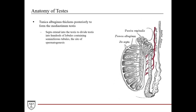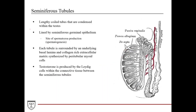The tunica albuginea thickens posteriorly to form what's called the mediastinum testis. From this thickened portion, septa extend into the testes to divide it into hundreds of lobules that contain seminiferous tubules, which are the site of spermatogenesis. You can see all these septa here, and between them are the seminiferous tubules — very coiled tubes where spermatogenesis occurs, essentially dividing the testes up into functional units.